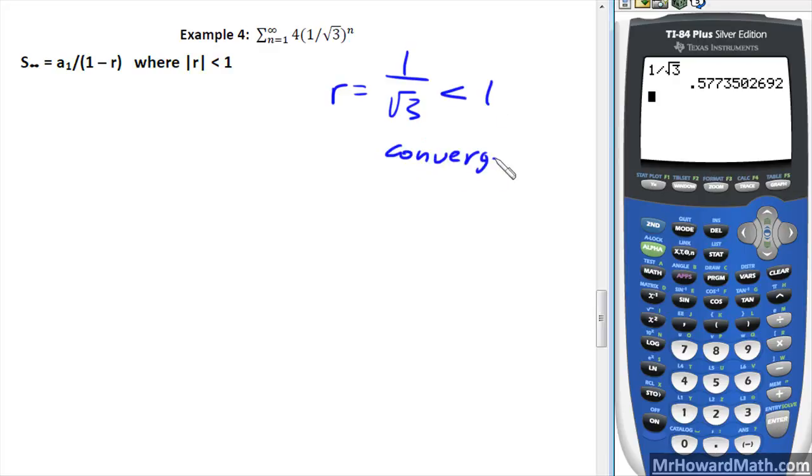We can actually find a value for this infinite geometric series. We need to plug it into the formula, so we need a sub 1. We work this out and put in a 1 right here. That would be equal to 4 times 1 raised to the first power, so it's just 4 over root 3 is our a sub 1 value.